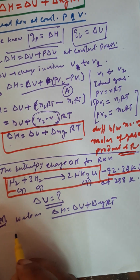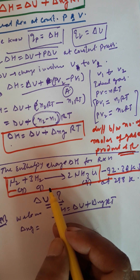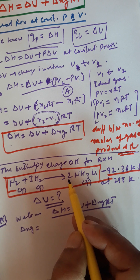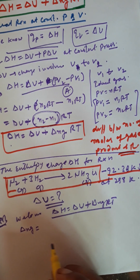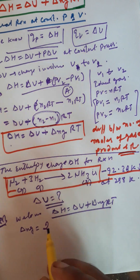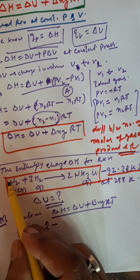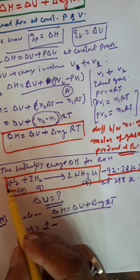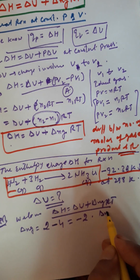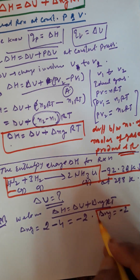यह हमारे पास reaction है — ΔNg calculate करेंगे। Difference of the number of moles of the product and reactant — पहले product की gaseous state लेंगे: 2NH3, यहाँ पर 2 moles हैं, तो यह हम लिख देंगे 2। अब reactant में: N2 के आगे coefficient 1 है, H2 के आगे 3 है, तो 3 + 1 = 4। और 2 - 4 = -2। इसका मतलब ΔNg की value -2 लेनी है।